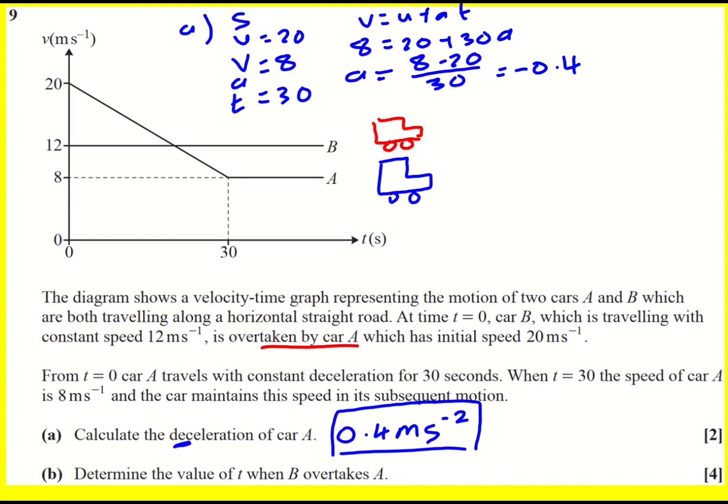On to the next part: when does B overtake A? Well, one thing we can do is work out how much distance each of them have traveled after 30 seconds. And rather than using SUVAT, I suggest here just using the area under the graph. So B would have traveled its constant 12 meters per second times the time, so 360 meters.